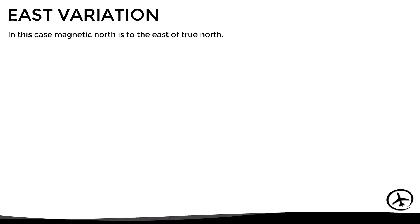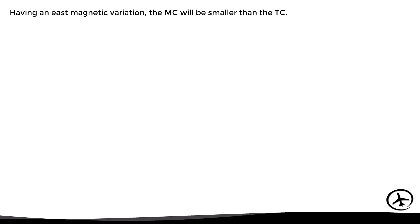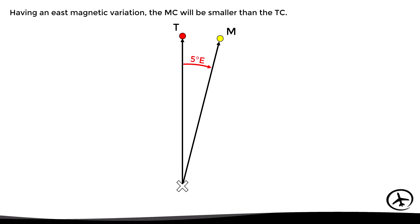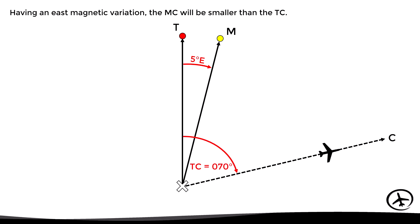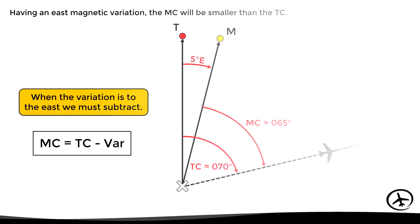When there is an east variation, magnetic north is to the east of true north. In this case the magnetic course will be smaller than the true course. For example, with an east variation of 5 degrees and a measured true course of 70 degrees, the angle between magnetic north and the course will be 5 degrees smaller — that is, 65 degrees. As a rule of thumb, when variation is east we must subtract: magnetic course equals true course minus the variation.